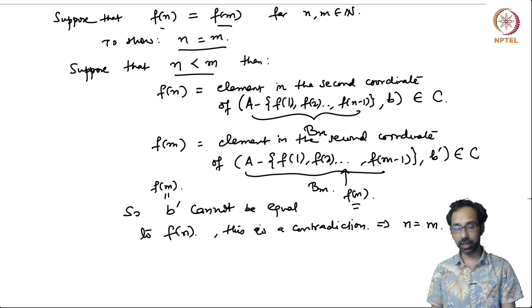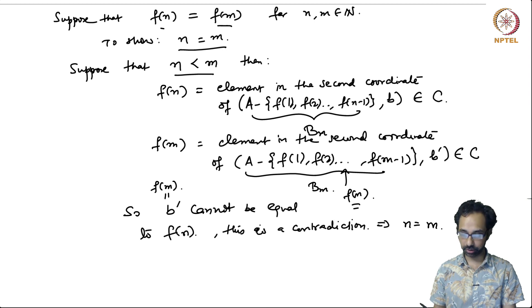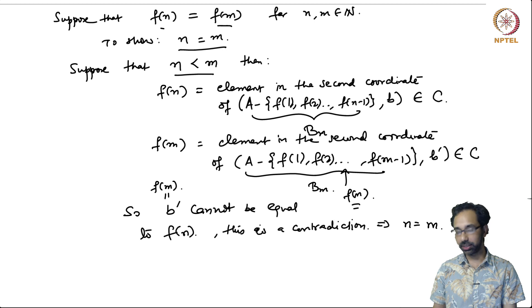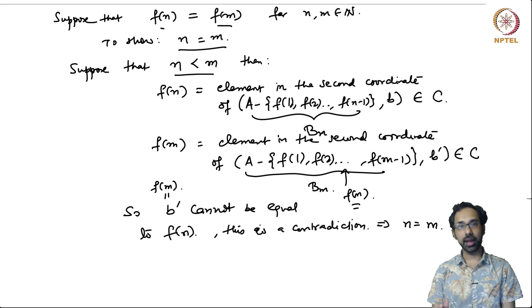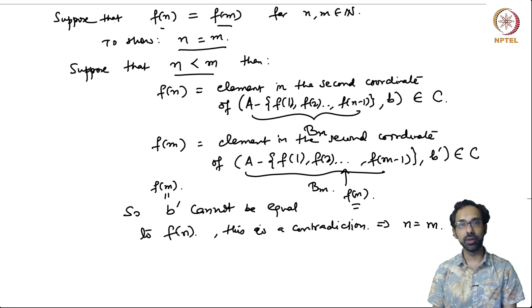We have shown that the axiom of choice can be used to prove that if a set is infinite, then there exists an injective function from the natural numbers to that set. This completes our discussion of set theory and logic. In the next lecture, we shall begin with the definition of a topology on a set X and see what the properties and axioms of such a structure are.